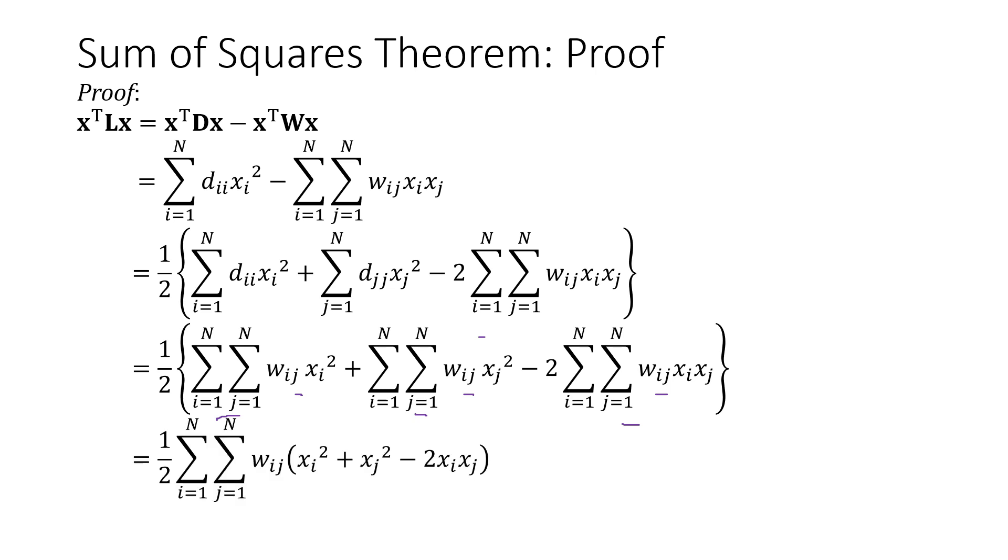And so we get half double summation wij xi square plus xj square minus twice xi xj, which is equal to, this simplifies to xi minus xj square. And this is what we have to prove. X transpose Lx is given by this quantity here. That's the sum of squares theorem. Hence proved.